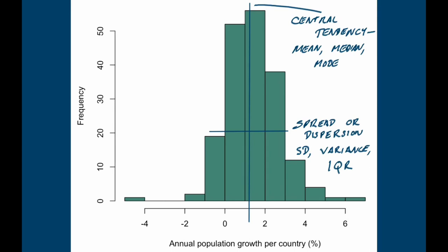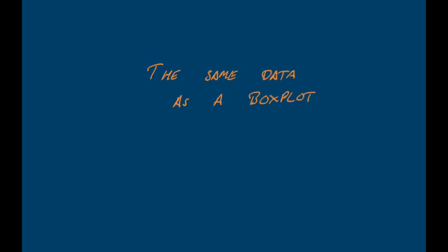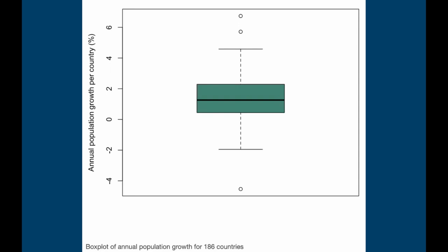So that's our data set — the frequency distribution of annual population growth per country. Now let's have a look at what that data set looks like when we draw it as a box plot. Here's the box plot. First thing you can see is that it's been flipped on its side compared to the histogram. Not all box plots are drawn vertically — we'll see quite a lot that aren't in just a minute — but this one is drawn vertically. Let's go through the components of the box plot one by one.